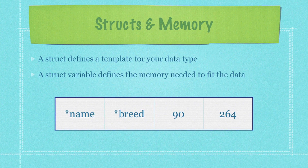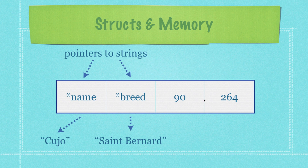Now you might be thinking to yourself, exactly how is this data stored in memory? Basically, the struct is just going to define a template for all of your data. Then a struct variable, when it is created, is going to define the memory needed to fit said data. These are going to be pointers to strings, while this data is just going to be regular integers — so they point directly at the data itself, while the string fields are pointers that then point to the strings themselves. That's how a struct is basically set up inside memory.